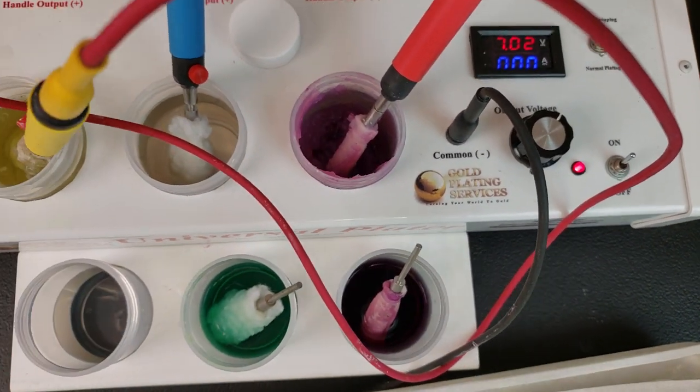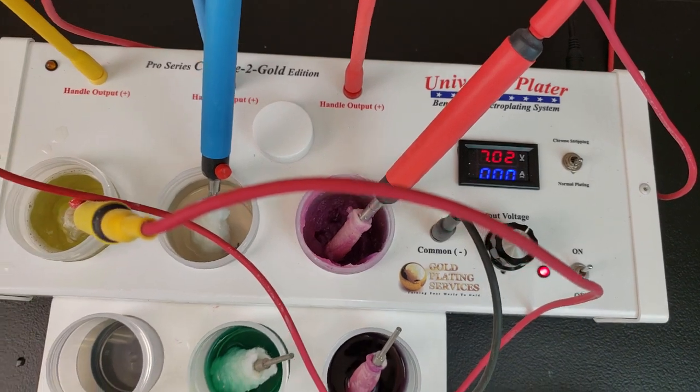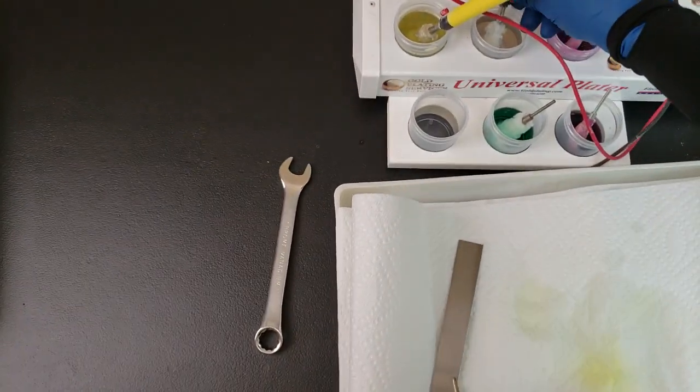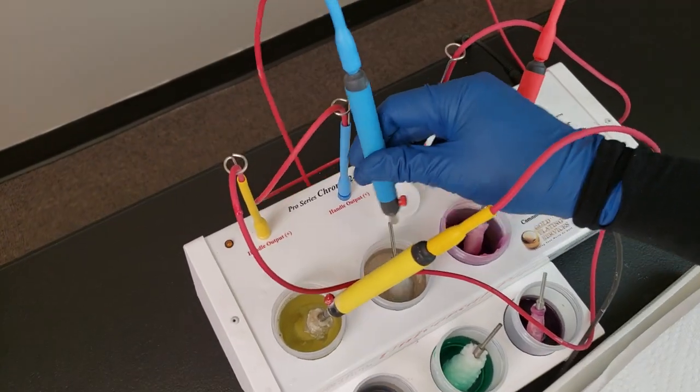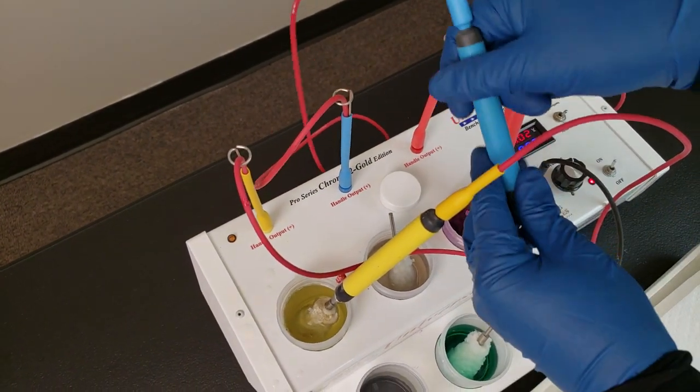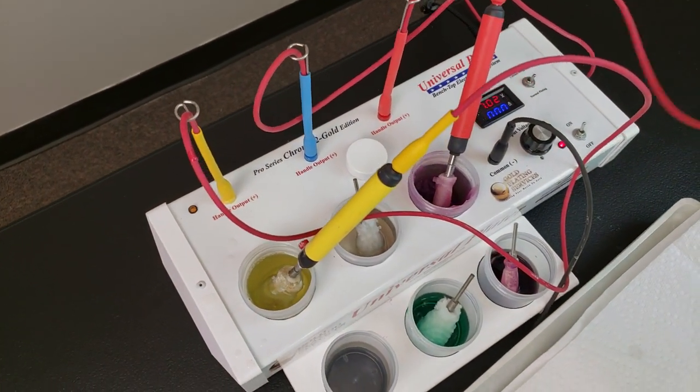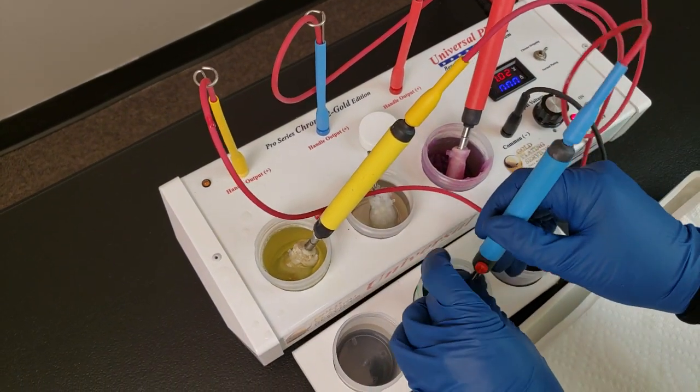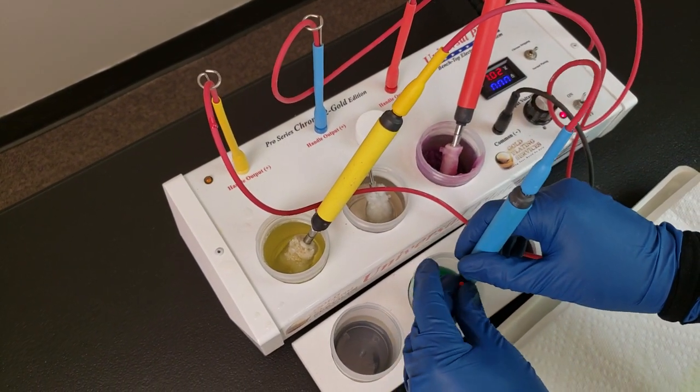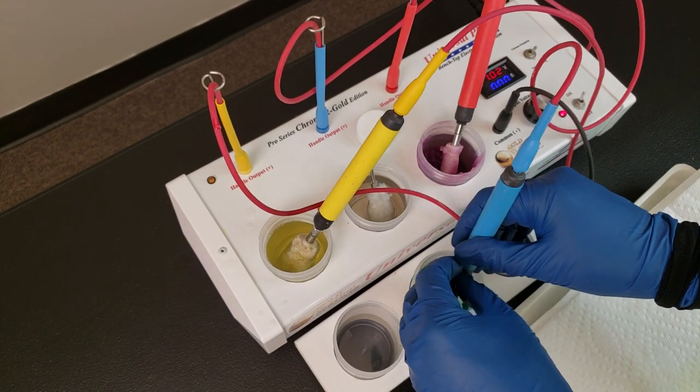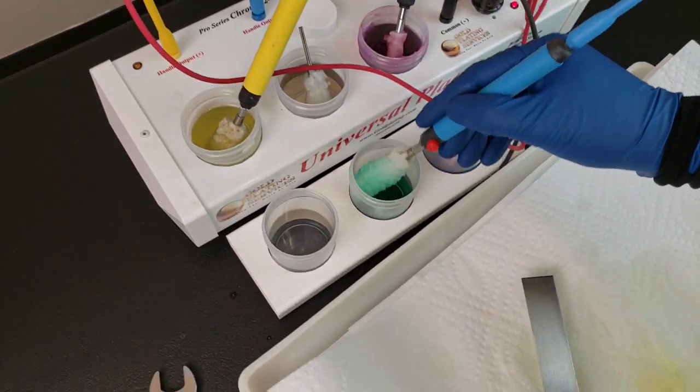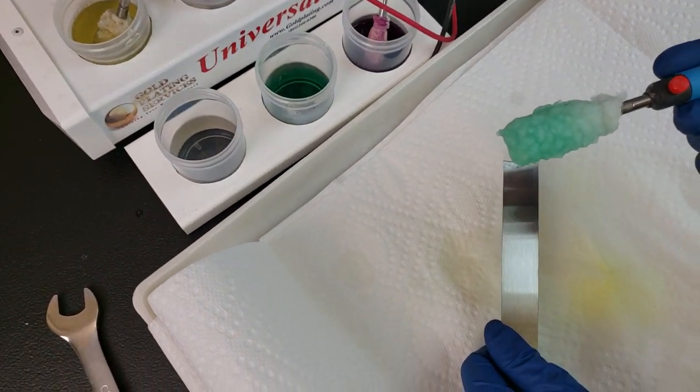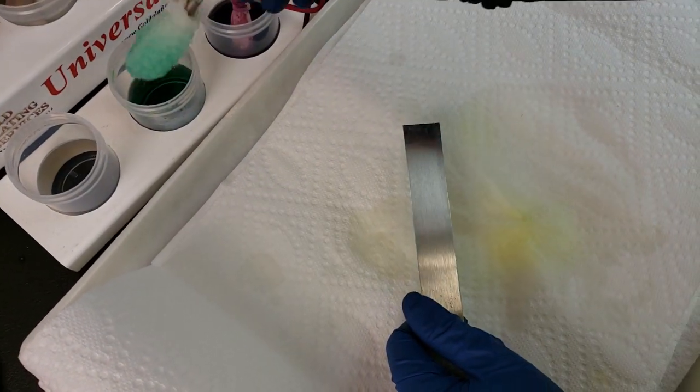What we need to do before we move on because we're not going to be using the activator is we're going to switch out our thumb screw here, undo it, leave the bit in that activator and we're going to hook up the wood's nickel strike. Now this is wood's nickel strike and it's only used for stainless steel and steel. It's basically an activator for those two solutions.